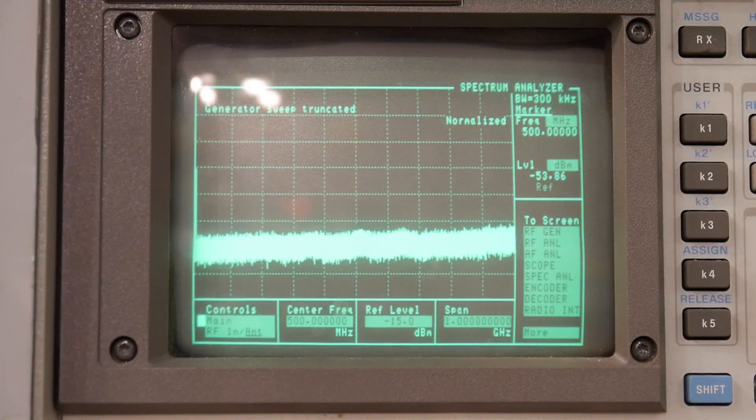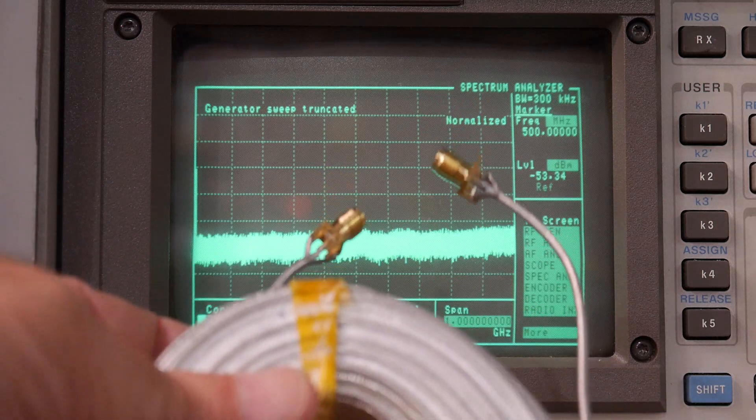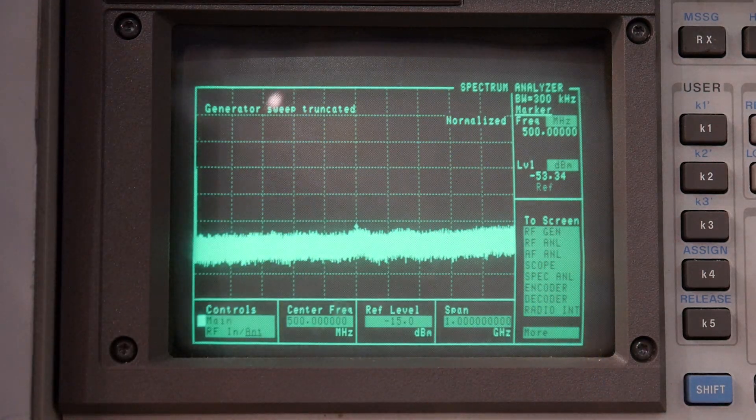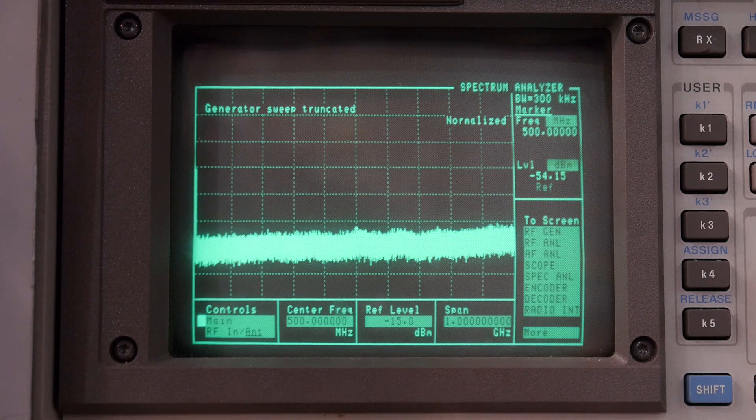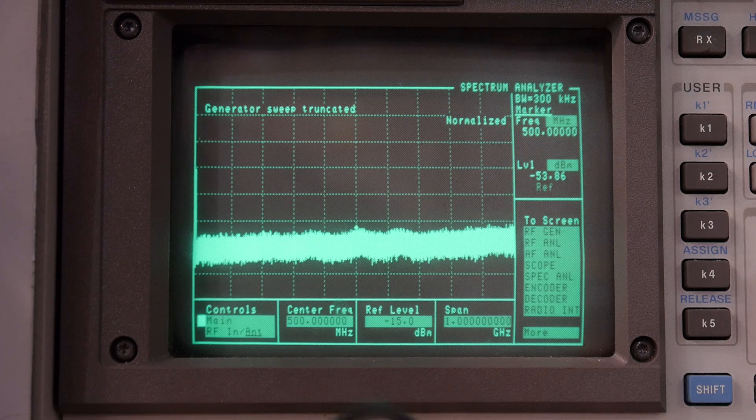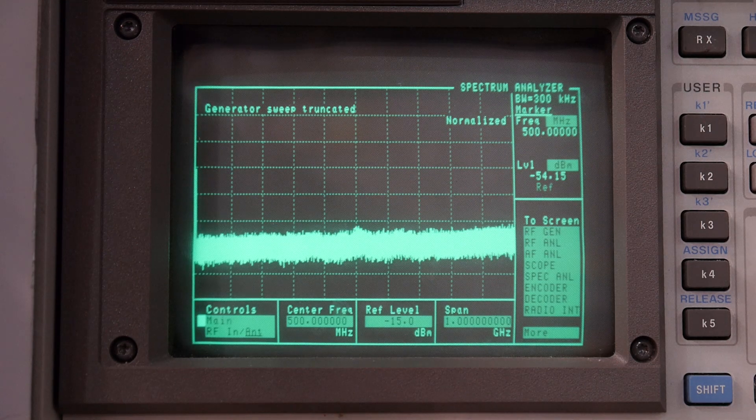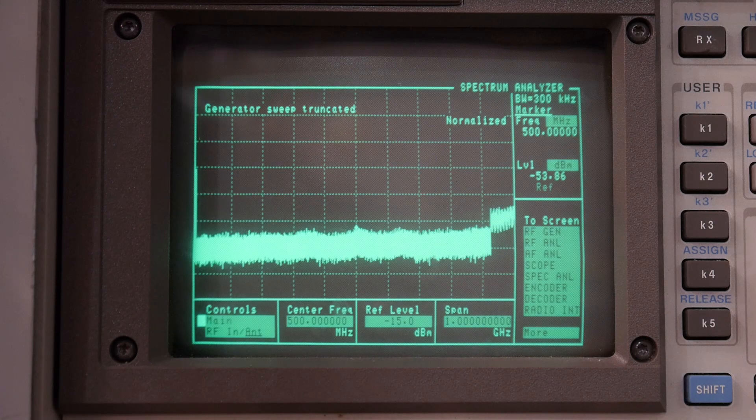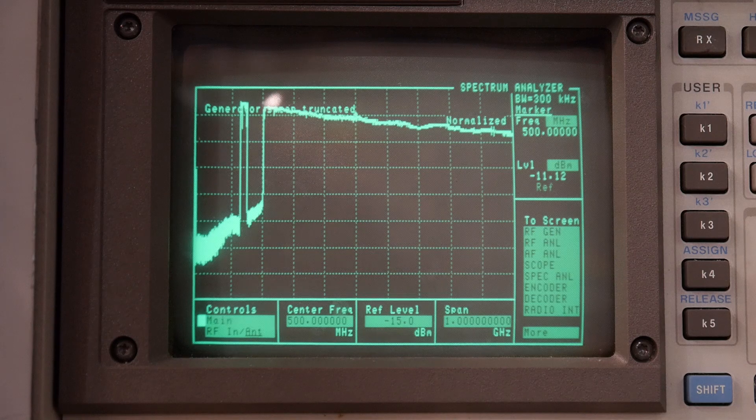And we will now take out the shorting female female and in its place we will put the hundred feet of coax. So we should see some attenuation from end to end. Now be aware that we're operating here at 50 hertz, my network analyzer is 50 ohms.